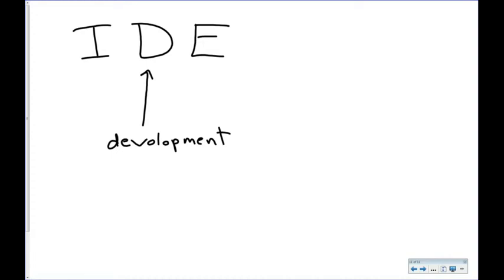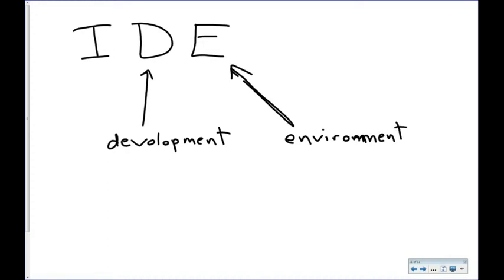Now let's go with the E. E is an easy one — it starts E-N. It's a word that describes the place you're in. Environment. So we want an environment — that's the program — where we can do development. That makes sense.